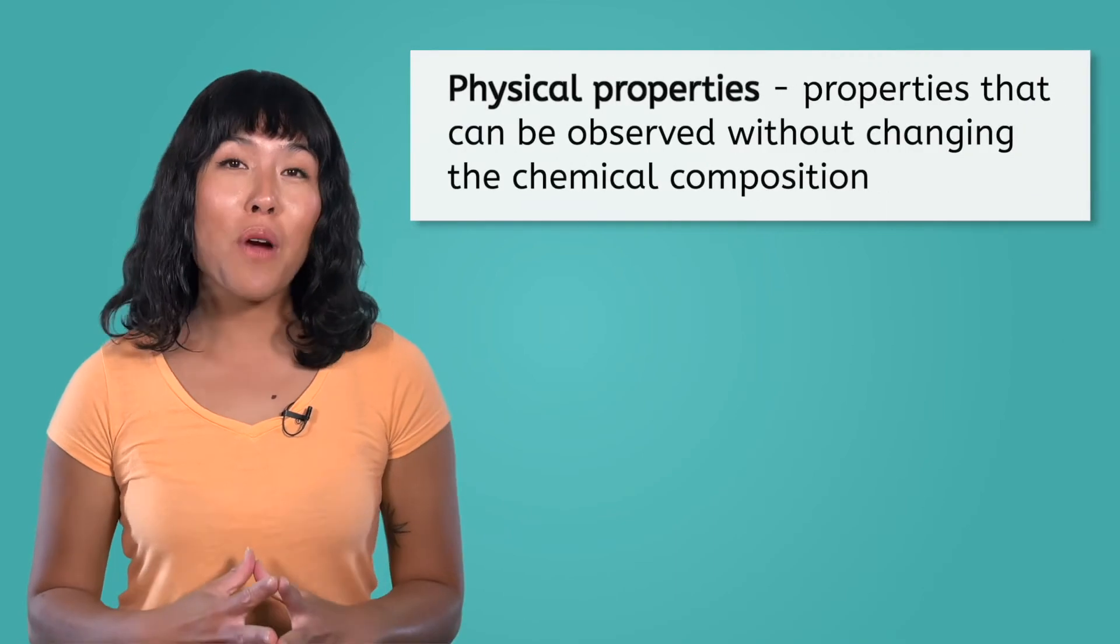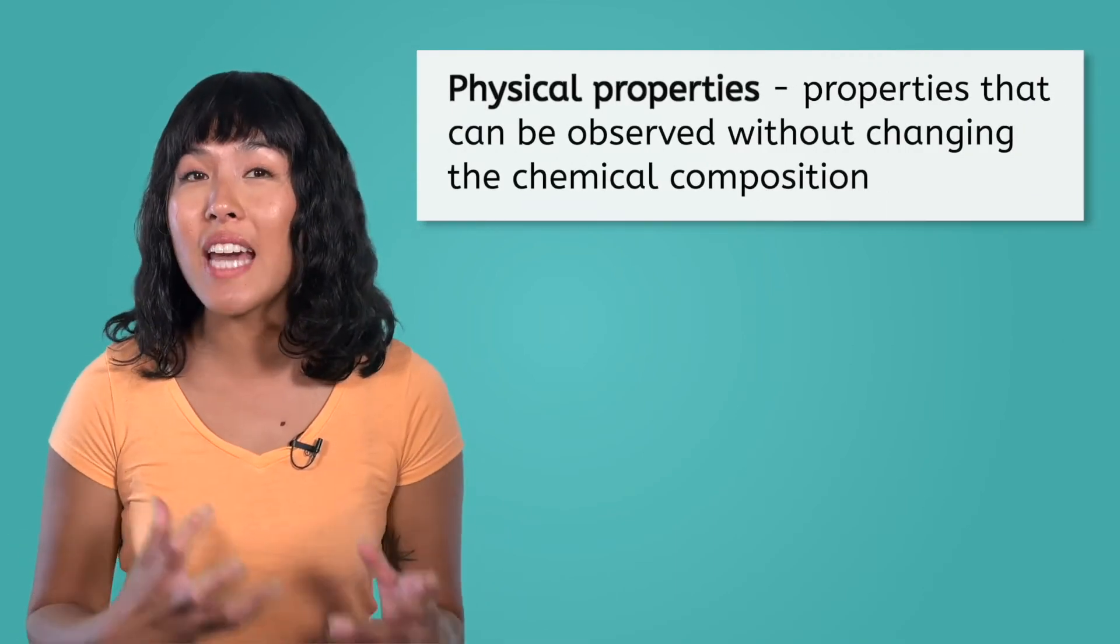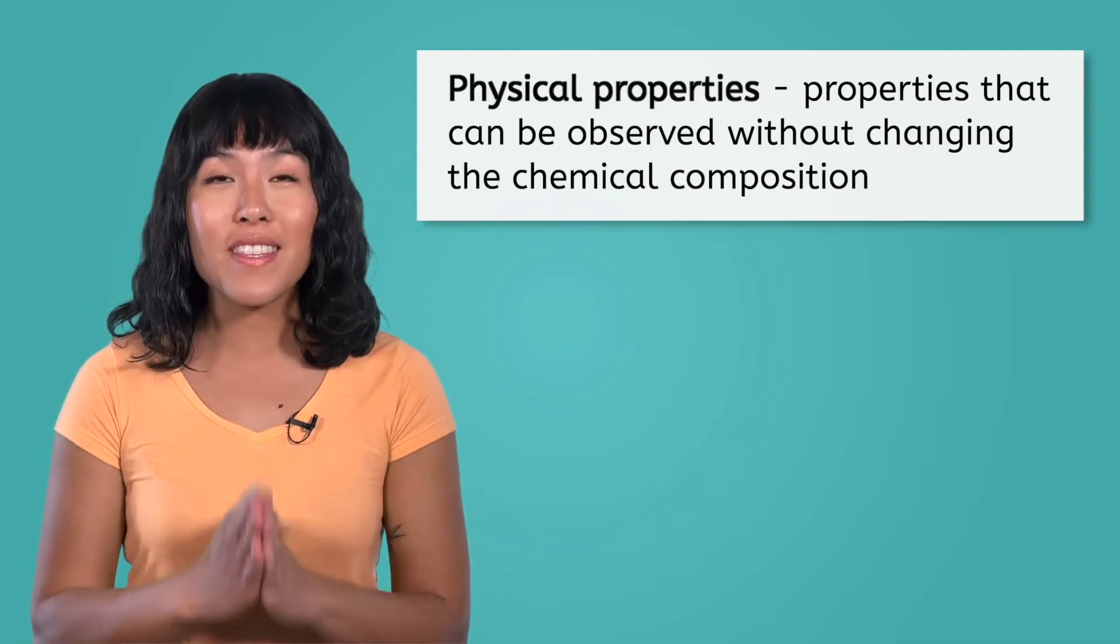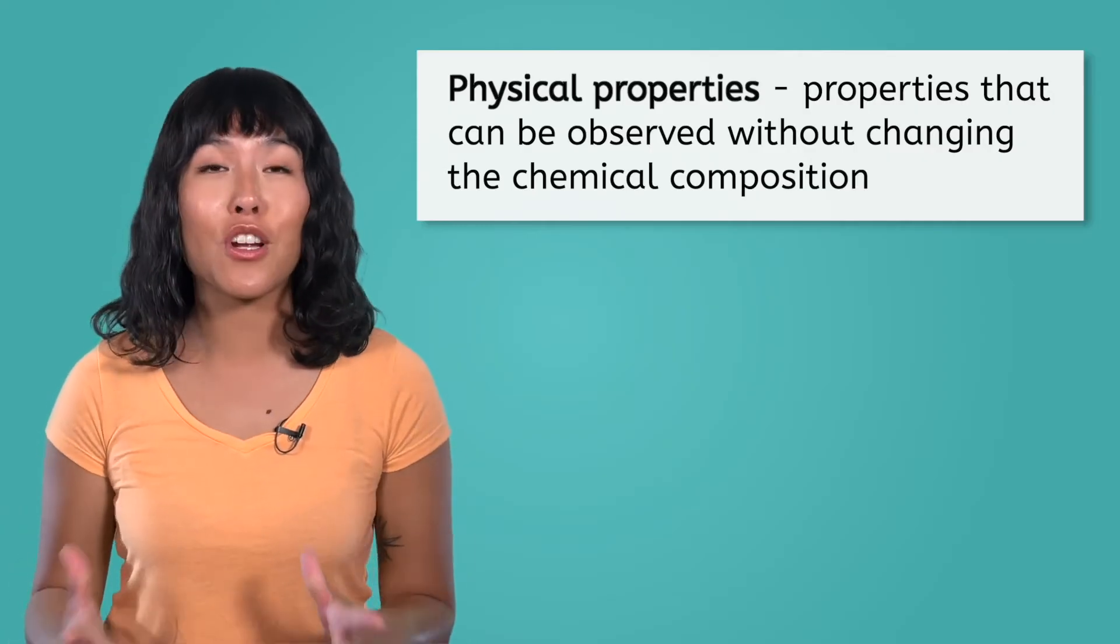Thinking back to the honey earlier in this lesson, we were able to easily describe its color and viscosity. Color and viscosity are examples of physical properties. Physical properties are properties that can be observed without changing the chemical composition, meaning you don't change what the substance is, but rather make observations based on what you see.